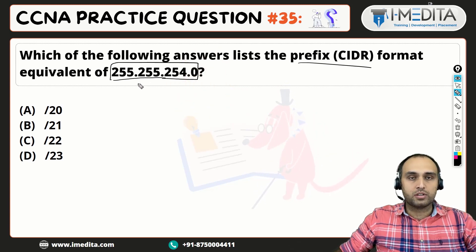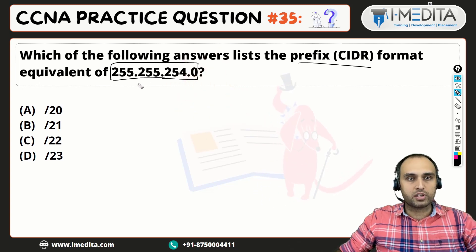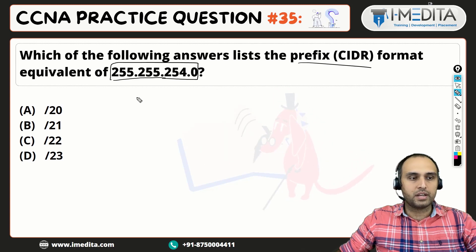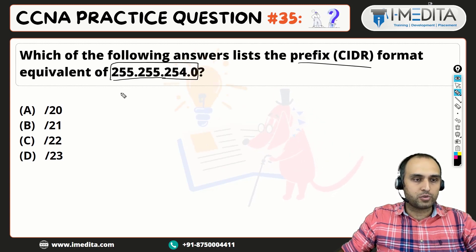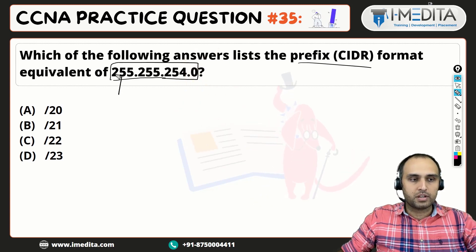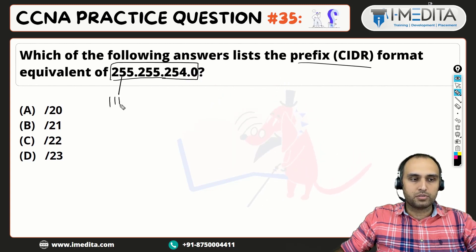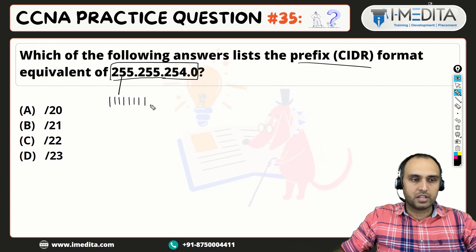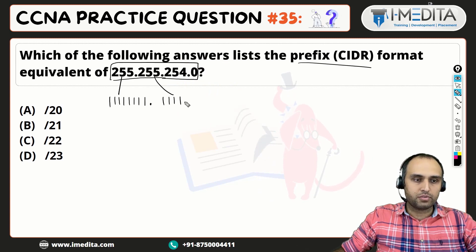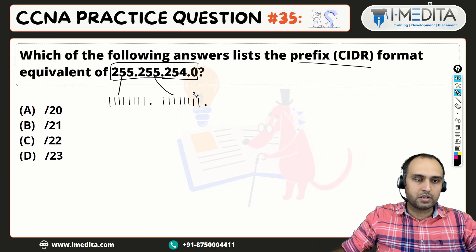We have a mask in dotted decimal notation and we need to convert it to slash notation. If we convert the first octet, that is 8 ones. If we convert the second octet, that is another 8 ones.